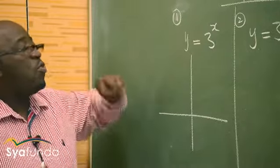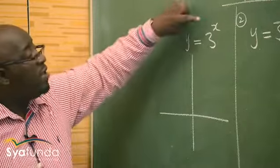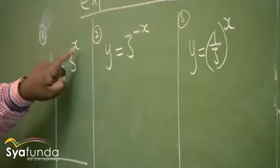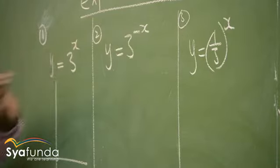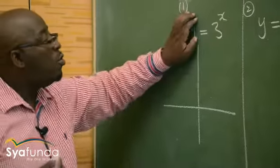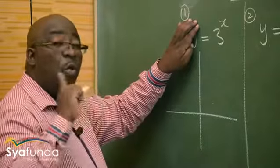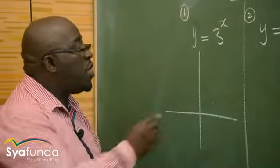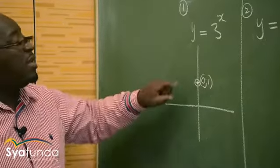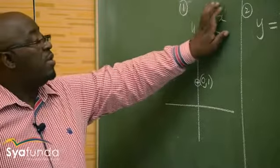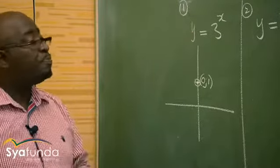So we know that whenever we want to find coordinates, if x is 0, what is going to be the value of y? y will be equal to 3^0, which equals 1. So we know that we have a point here. If x is 0, y will be 1. We know this point. When you make this 0, this whole thing will equal 1.